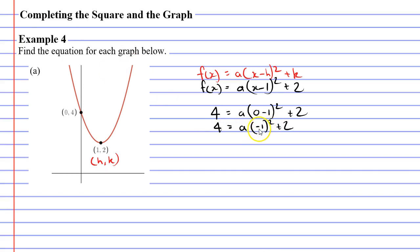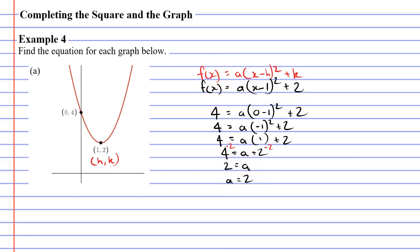If I square negative 1, negative 1 times negative 1 is just 1. So 4 equals A times 1 plus 2. A times 1 is the same as just A, so 4 equals A plus 2. Then I subtract 2 on both sides and I find that A equals 2. Now I can finish off my function: f(x) equals 2 times (x minus 1) squared plus 2. And that's question A complete.